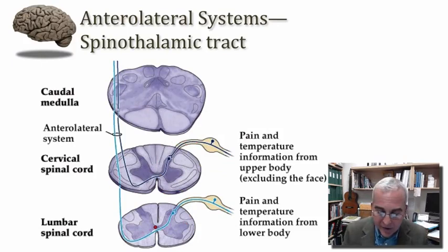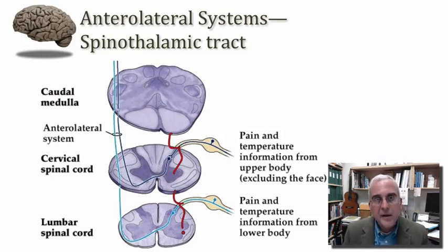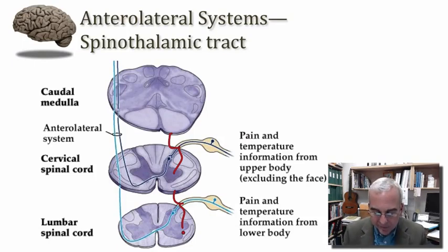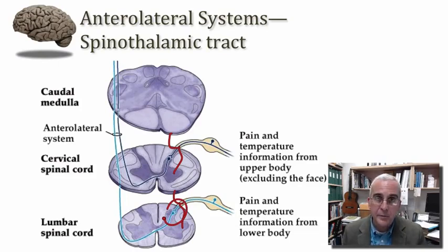That first-order axon may bifurcate and travel up and down, perhaps as much as a segment or two in the spinal cord, but not much further. Soon after that distribution across a couple of spinal segments, there will be a synapse. The second-order neuron is going to be within a segment or two of the dorsal root that attaches to the spinal cord and supplies that axon its entrance into the central nervous system.